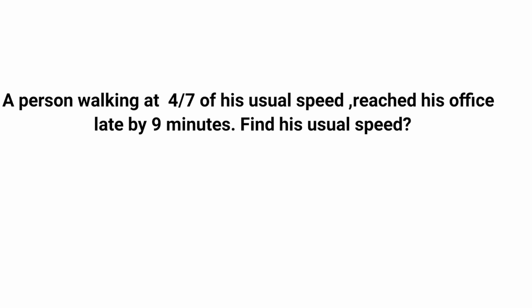Let's get started. First question: a person walking at 4/7 of his usual speed reaches his office late by 9 minutes. Find his usual time. You can solve this using the normal method — speed equals distance divided by time.